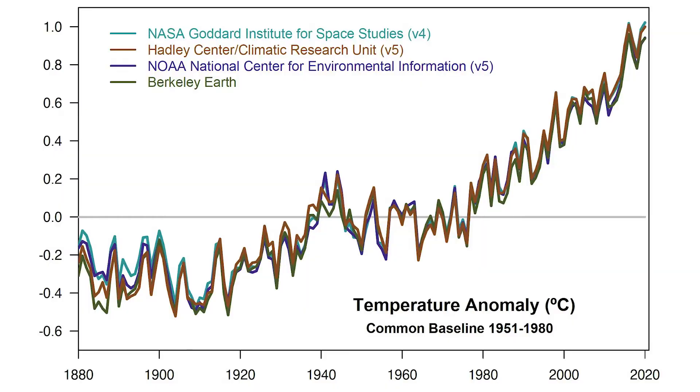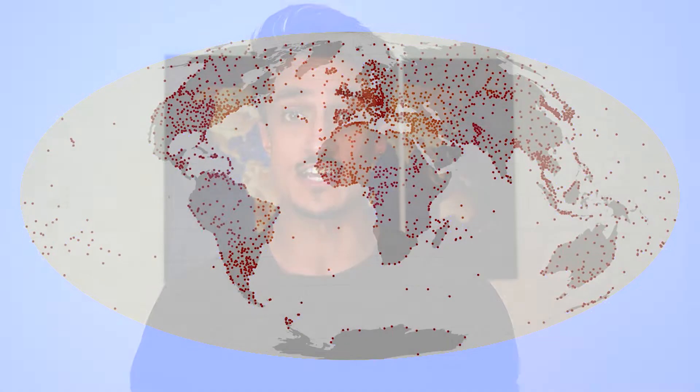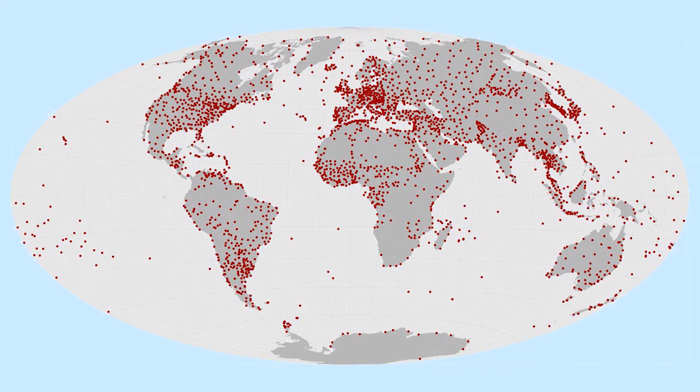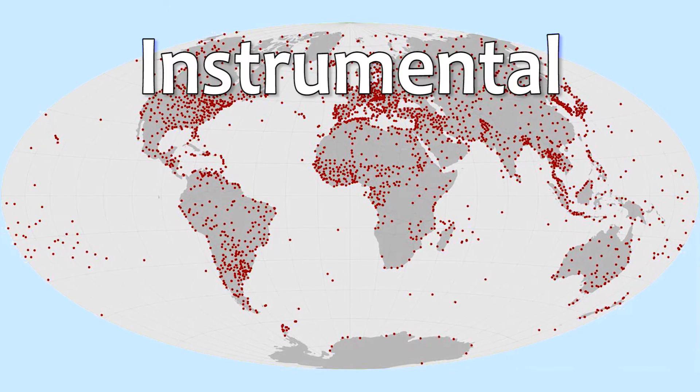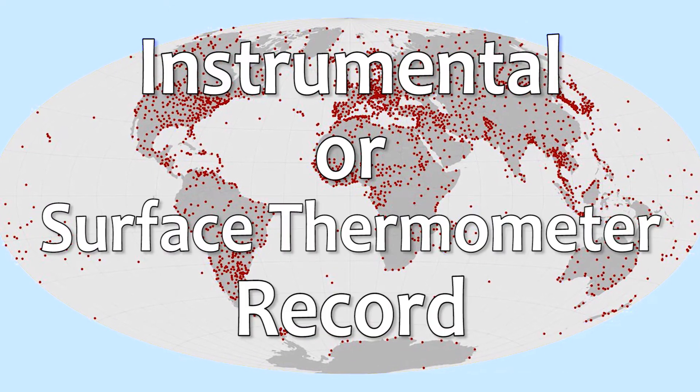This graph, for example, tells us that 2020 was on average a degree warmer than the 1951 to 1980 average. So that's why we use temperature anomalies rather than absolute temperature. But how do we go about collecting this data in the first place? Well, there are two key methods. The first involves collecting measurements from various weather stations around the planet.